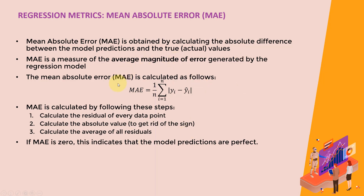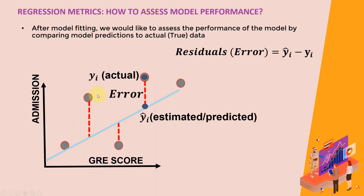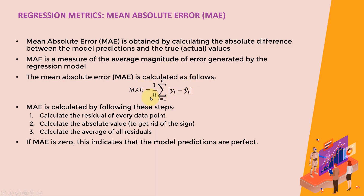Please note that in this course we are not doing any coding, so all these metrics will be generated for you automatically. The intent of this lecture is to give you the intuition from a high level. The mean absolute error is obtained by calculating the absolute difference between the model predictions and the true actual values for every single data point, then summing up all those values and dividing by the overall number of samples N. The MAE is a measure of the average magnitude of error generated by the regression model.